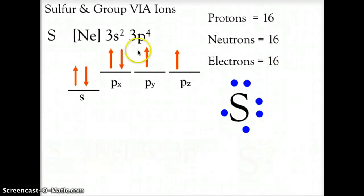When we go to the oxygen family, we will use sulfur as our representative atom, and this is group 6A. We look at Neon 3s² 3p⁴, 6 valence electrons, 2 in the s and 4 in the p, 2 in the first px, 1 in the py, and 1 in the pz, giving us a count of 16 protons, 16 neutrons, 16 electrons.